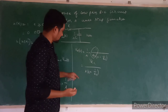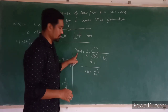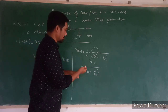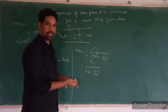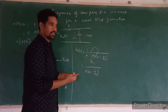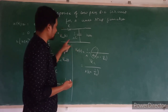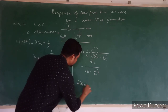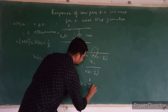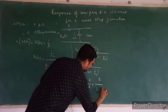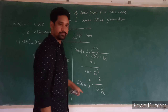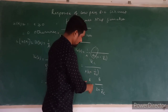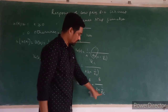To obtain the response in the time domain, we must split V_naught(s) into partial fractions and then take the inverse Laplace transform. V_naught(s) can be written as A divided by s plus B divided by s plus 1 upon RC. This is the standard partial fraction form for this expression.